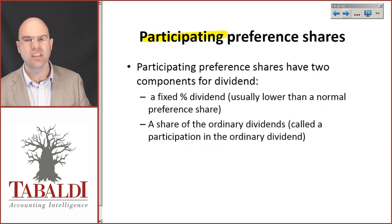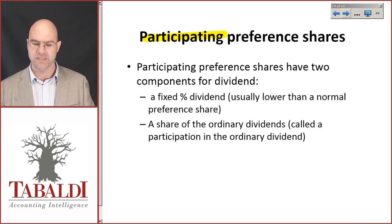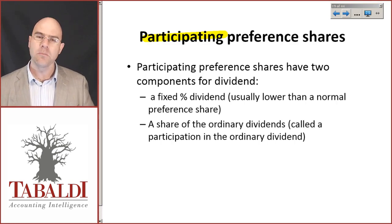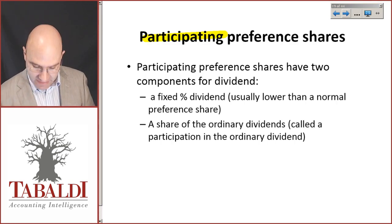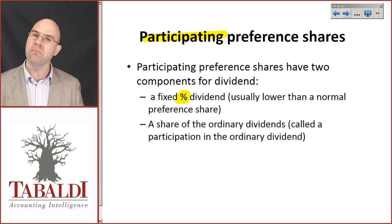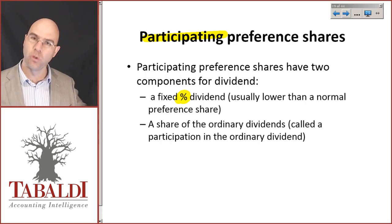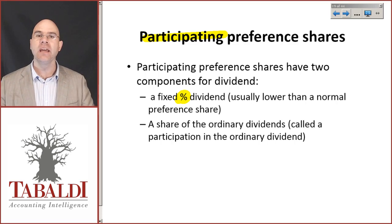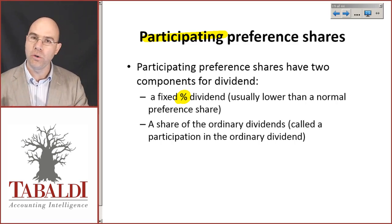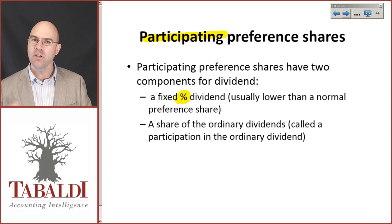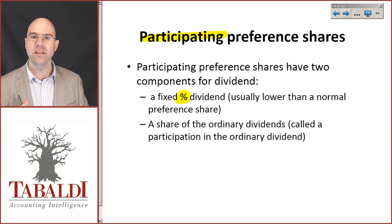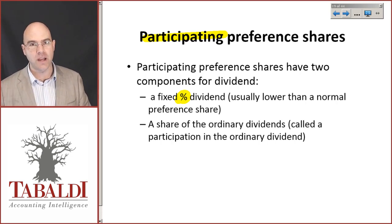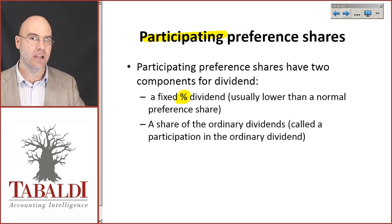Participating preference shares will not be tested in FAC1601, but here you get a fixed percentage dividend — usually much lower than a normal preference share — but you also share in some of the upside and participate in a portion of the ordinary dividends. It's a riskier kind of investment, but with higher risk usually comes a higher return.